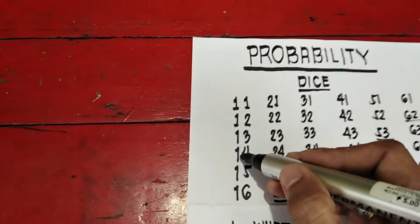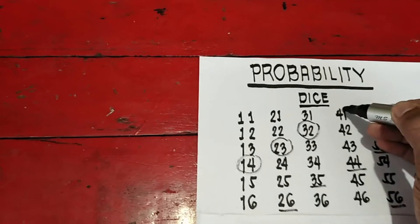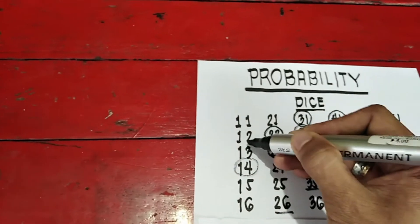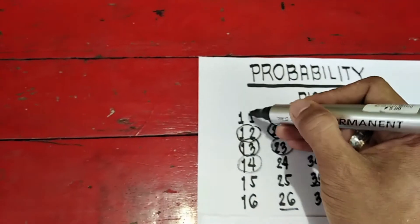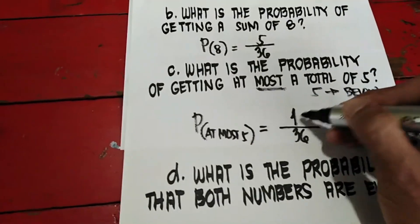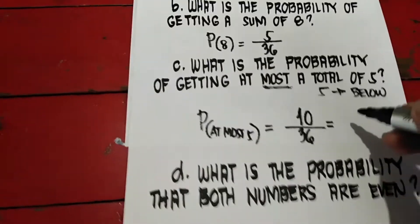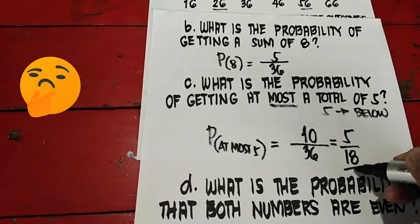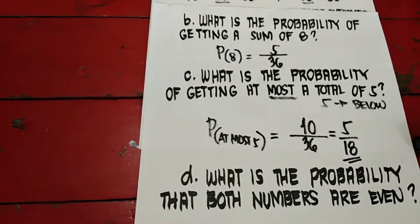Probability of at most 5 is equal to the total which is 36. Then hahanap tayo doon sa table natin ng at most 5. Ibig sabihin ang sum niya is 5 pababa. At most 5. Bilangin natin: 1, 2, 5 yan, 3, 4, 5, 6, 7, 8, 9, and 10. So there are 10 possible outcomes. Then lowest term natin, divided by 2. This is 5. Divided by 2, this is 18. Ang probability of at most 5 is 5 over 18.